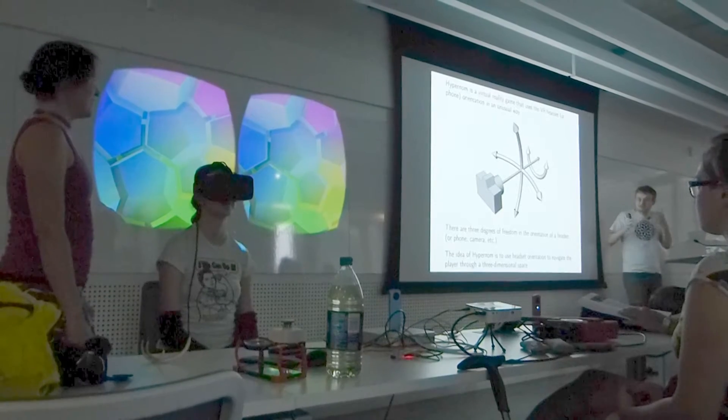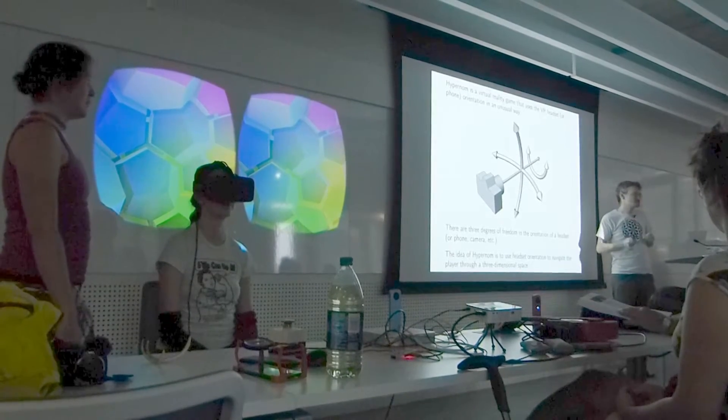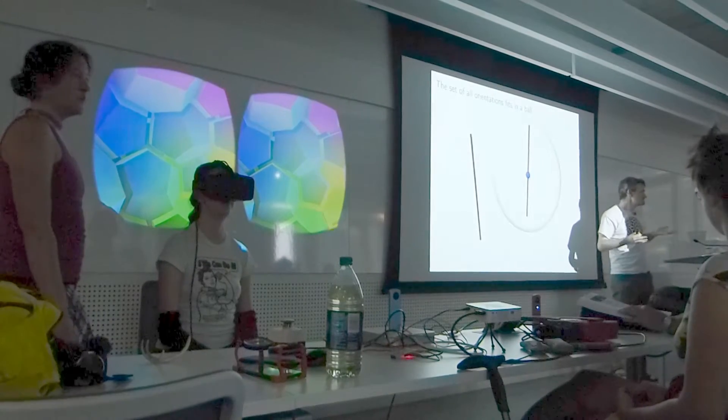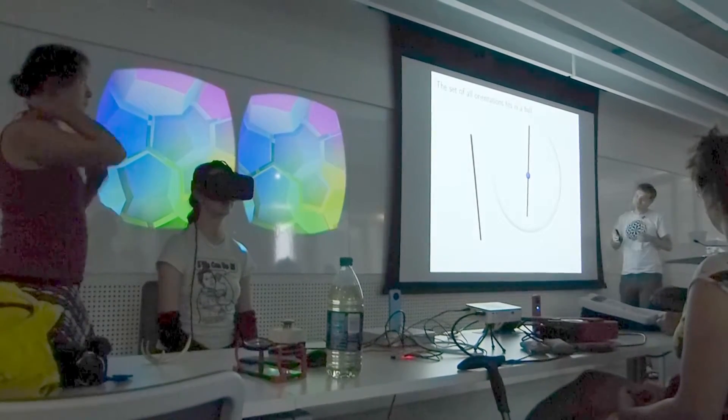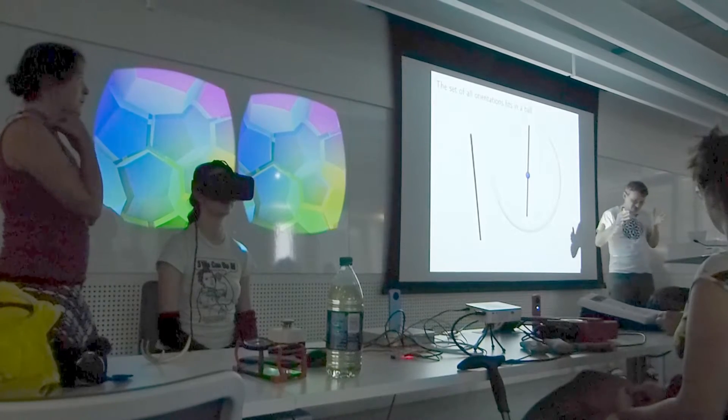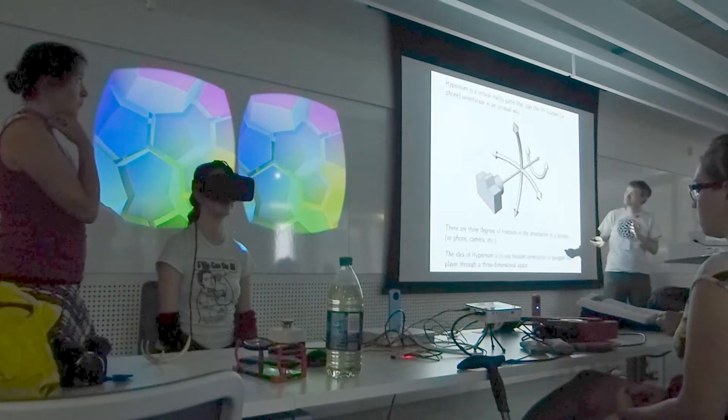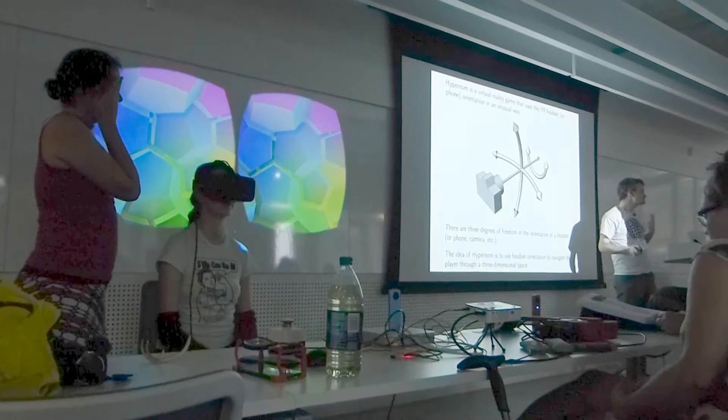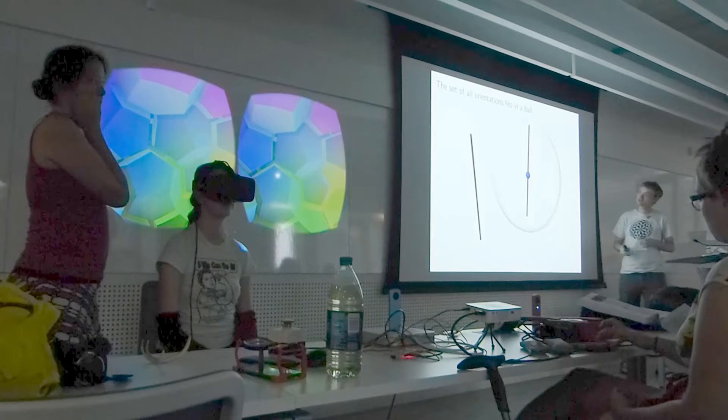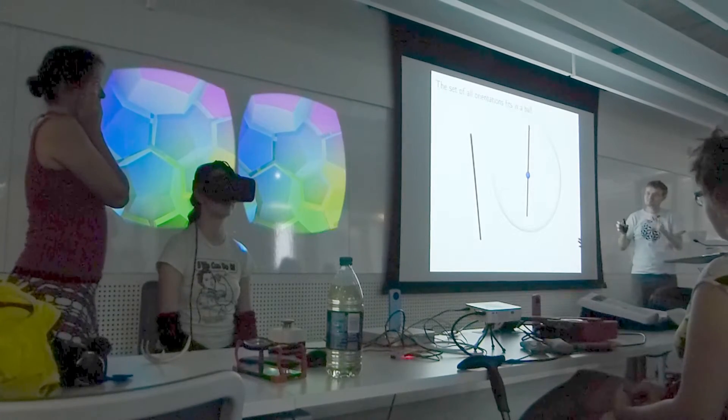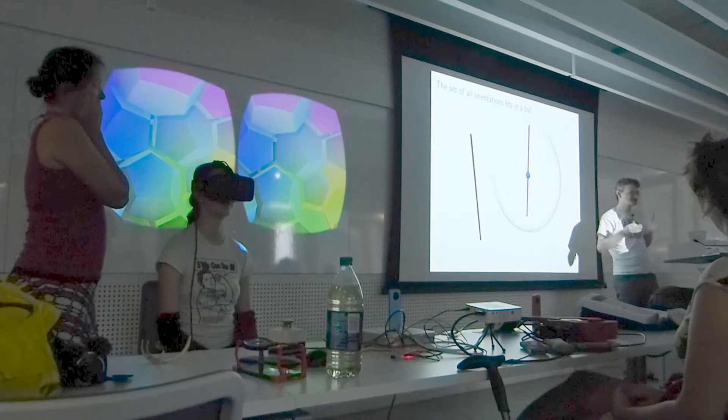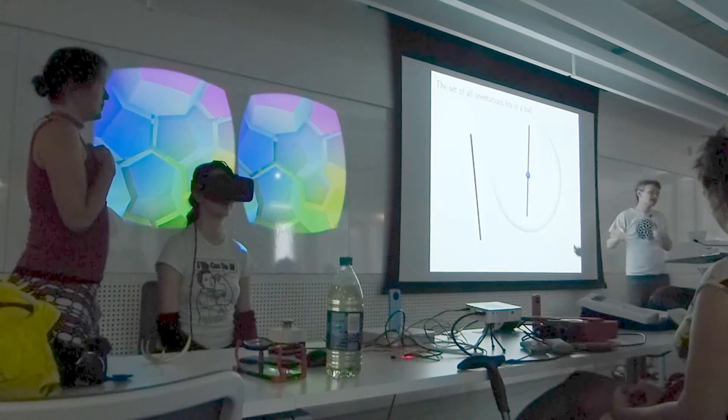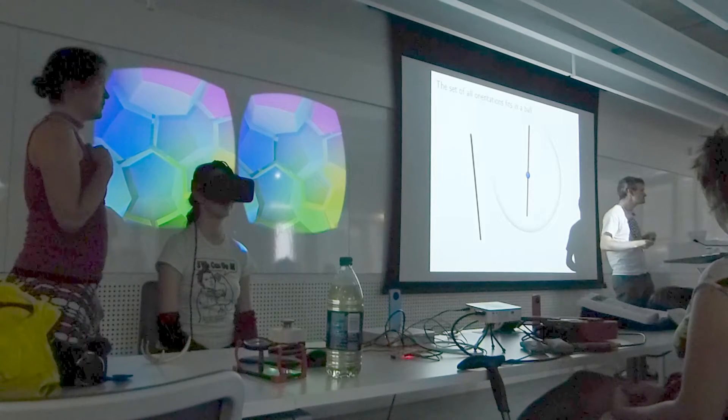We're using the orientation of the headset to navigate through the space. So I need to tell you what the space of orientations is. It turns out the set of orientations of the headset is a three-dimensional thing. There's three ways you can move from any point. We're going to start with some base orientation, Vi's head looking straight ahead. We'll label that at the center of a ball, and the set of all orientations are going to fit inside of this ball.